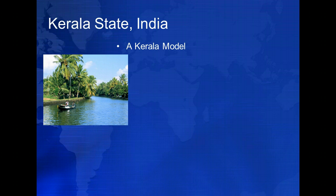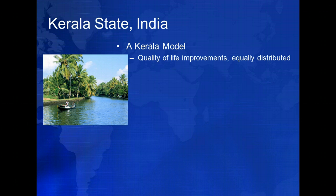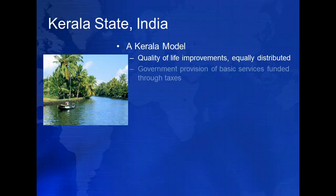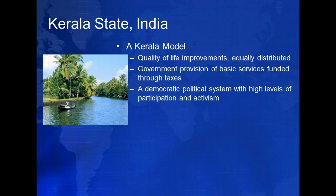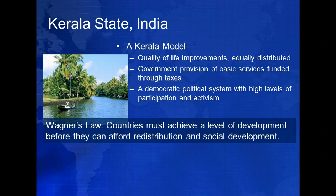All of this has led observers to describe the achievement as encompassing a Kerala model. The Kerala model has several elements: improvements in material quality of life, distributed equally across society, while still having low per capita incomes. Such benefits are distributed equally across all society, with no substantial divides based on gender, class, caste, or rural residency. Government-sponsored provision of basic services like health and education, largely funded through redistribution programs and taxes. And high levels of political participation and activism among ordinary people in a largely democratic political system. Kerala's model thus challenges traditional understandings of development, which posited that countries must achieve a particular level of development before they can afford redistribution programs or social development. This idea is known as Wagner's Law, and suggests that social development was not a viable path towards economic development. Countries needed to focus on economic growth first, and then would have the resources necessary to pursue social development at a later date.